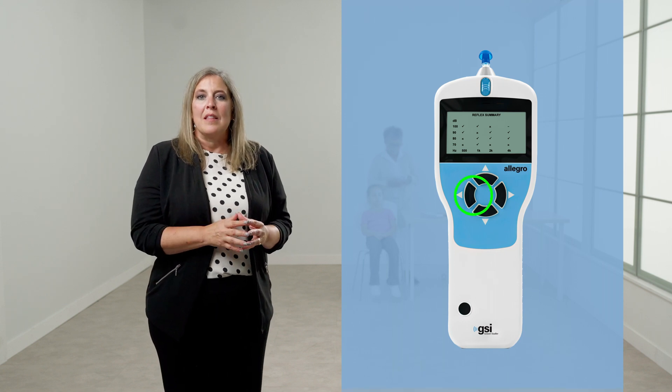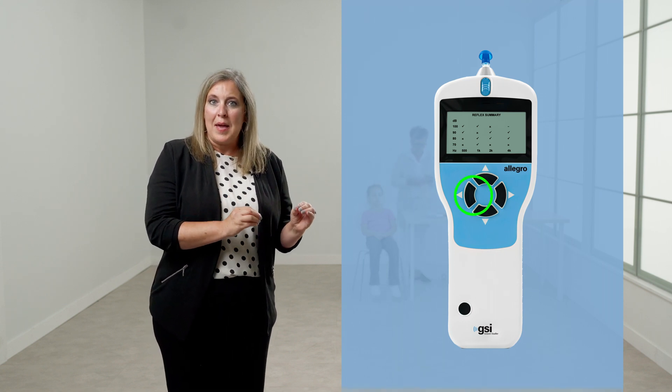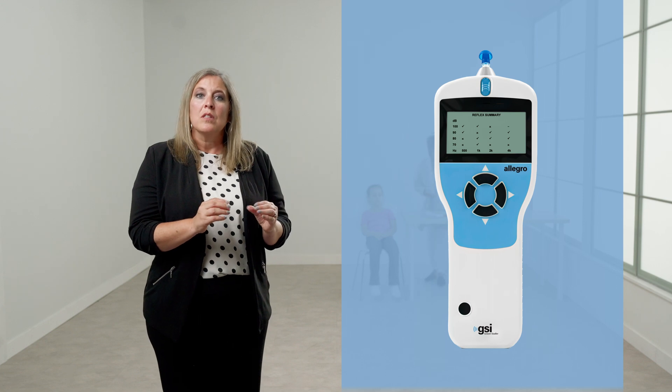It is possible to press the left button to return and view the tympanogram, the reflex results, or to repeat the test. When satisfied with all of the results, press the right button. If test both ears was selected at the beginning of the evaluation, you will be prompted to insert the probe into the other ear and the entire sequence will be repeated.